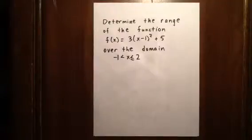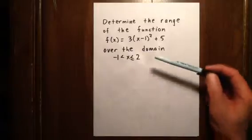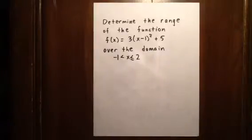In this question, we're going to determine the range of the quadratic function f(x) = 3(x-1)² + 5 over the restricted domain -1 < x ≤ 2.